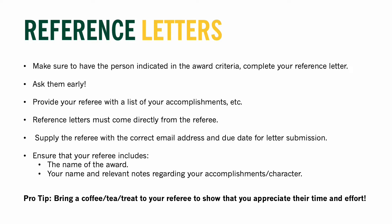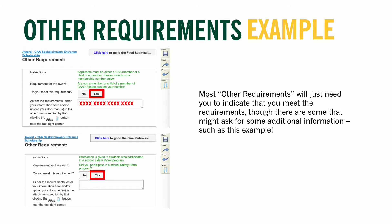Pro tip: bringing the referee coffee or a treat is a great way to show them you appreciate their help. Another section that could show up under the award is the personal statement or essay. This is completely separate from the personal statement in the checklist section — it appears as an 'Other Requirement' because this award is asking for a personal essay that is much more specific than the general personal statement in the checklist.